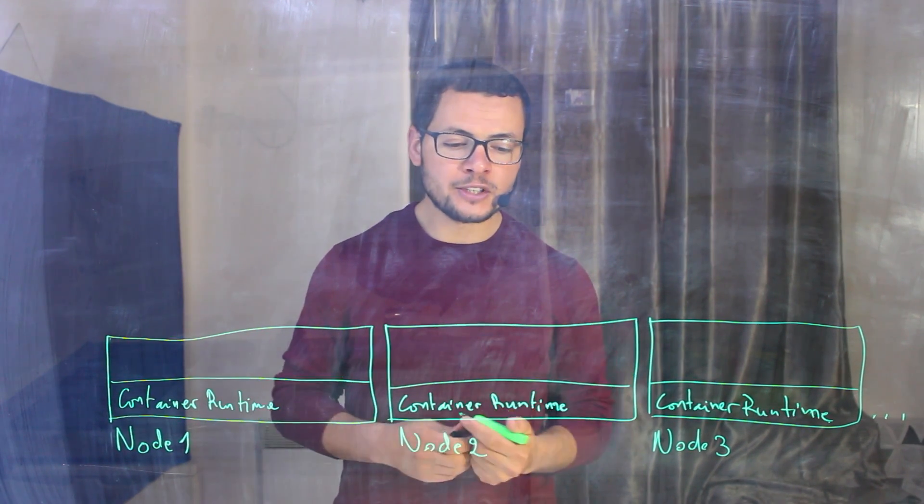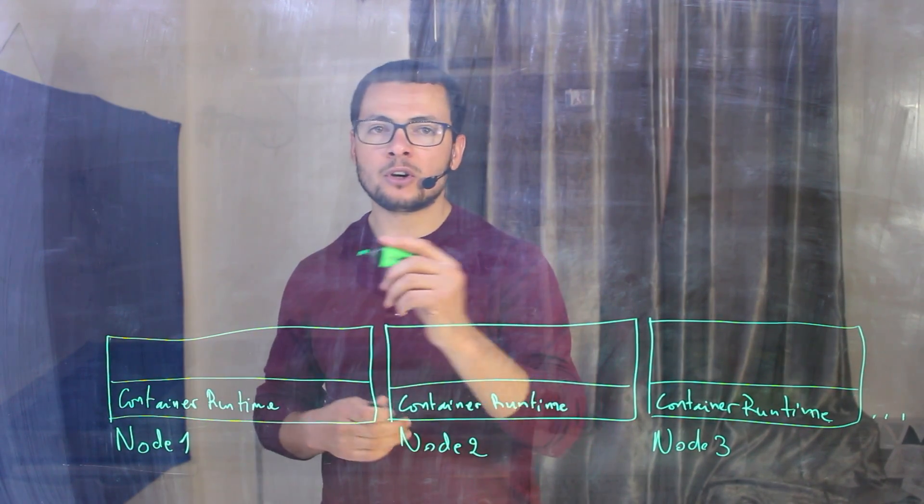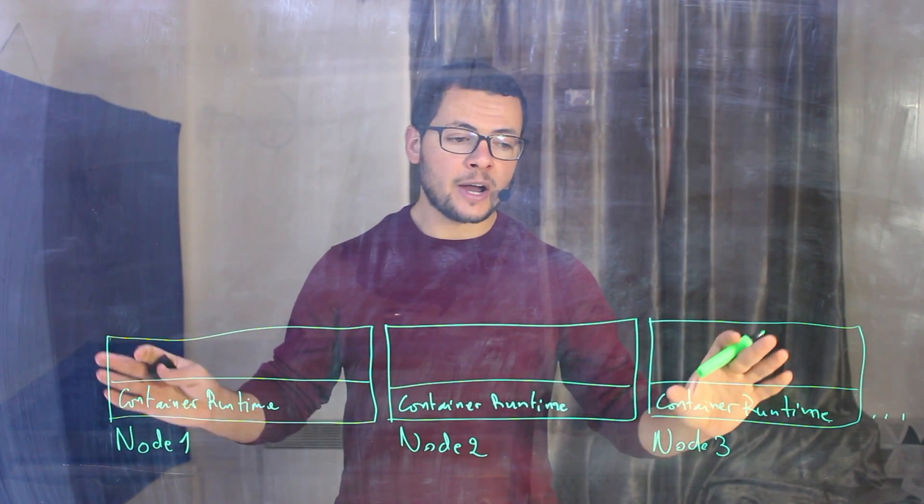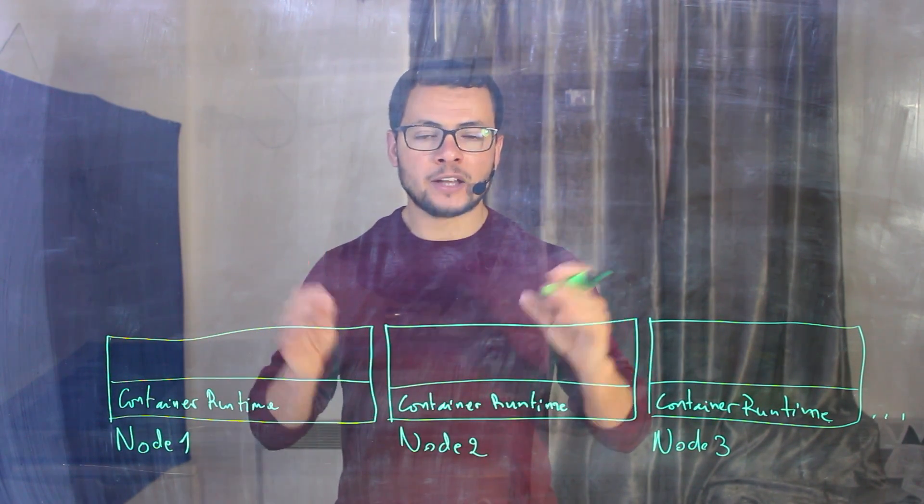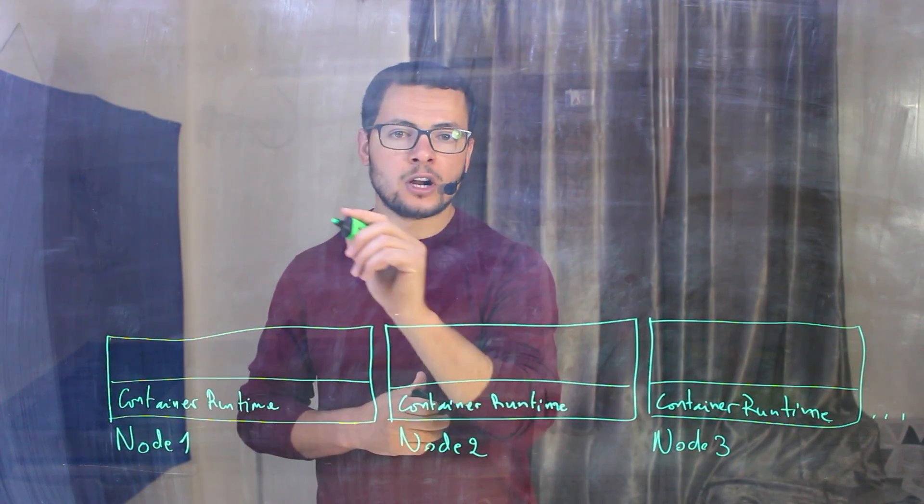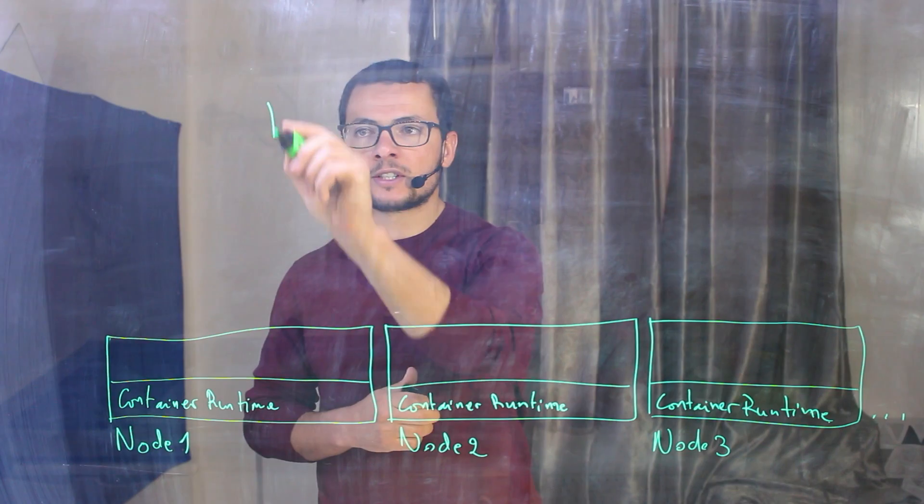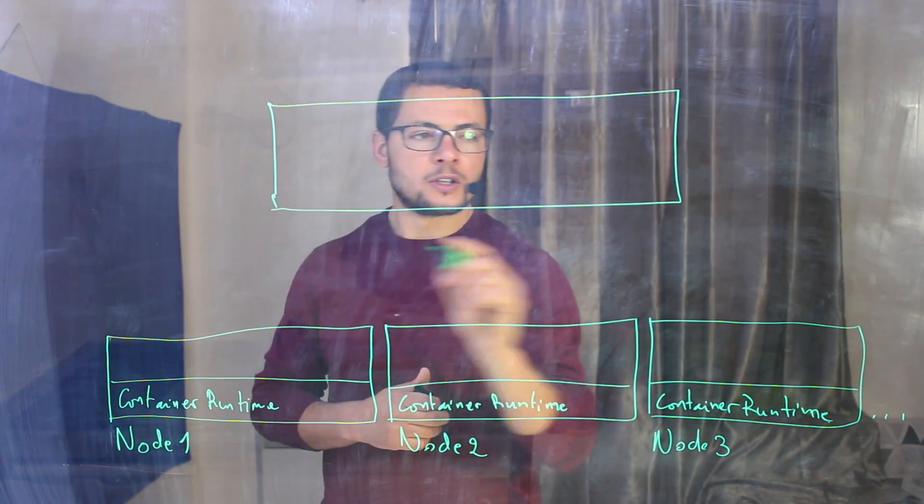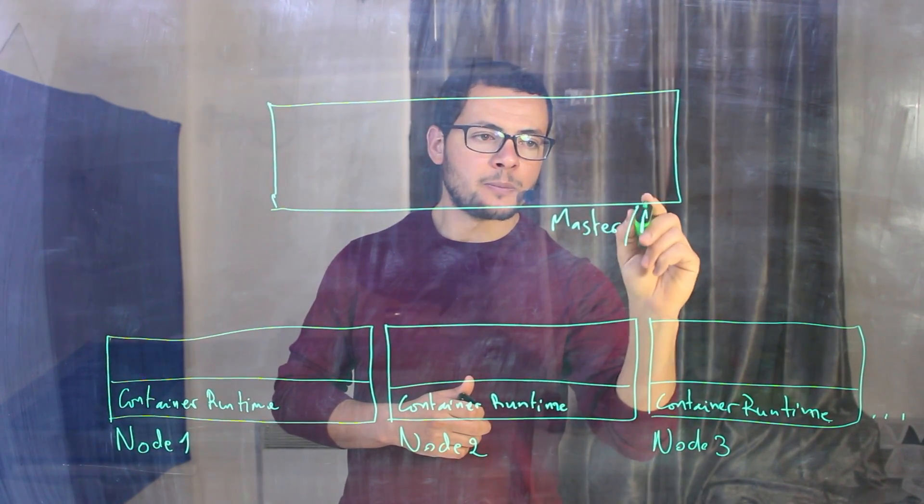So with Kubernetes, we'll have another virtual machine or physical server called the master. That one will try to make sure that my containers and my configuration is always up and running. So we'll have another node here called the master. So it could be called the master or also called the control plane.